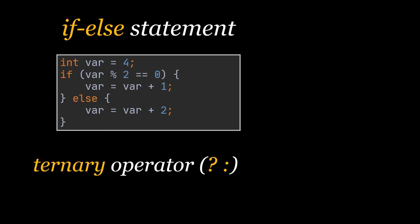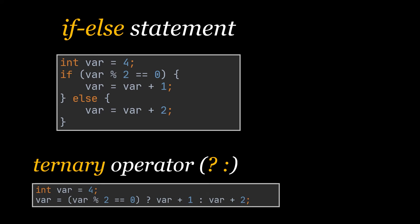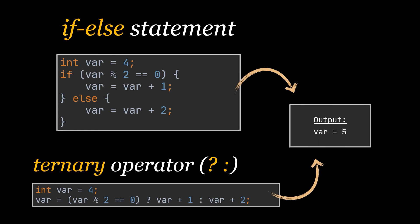If it is even we increment it by one, if not we increment it by two. Using the ternary operator, the same exact behavior can be replicated. In our example the variable is equal to four, which is an even number, so the output in both the if-else and ternary operator will be five.